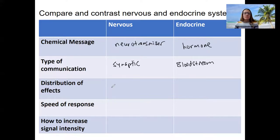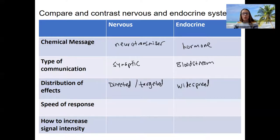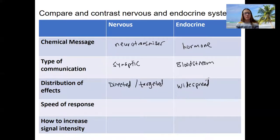Distribution: for the nervous system, it's going to be directed to one specific thing — targeted. The distribution of the endocrine system is widespread, because the hormones travel throughout the body in the bloodstream. So the endocrine system has potential widespread effects everywhere in the body — effects in more than one place.